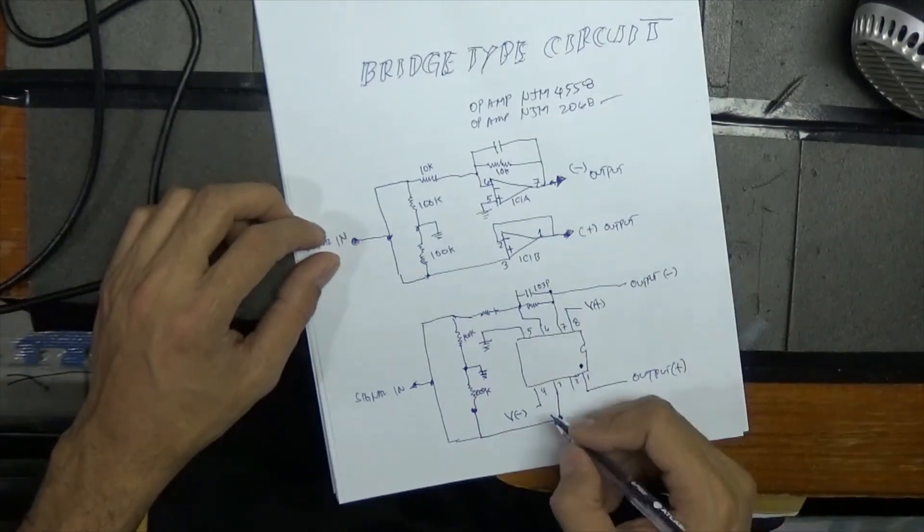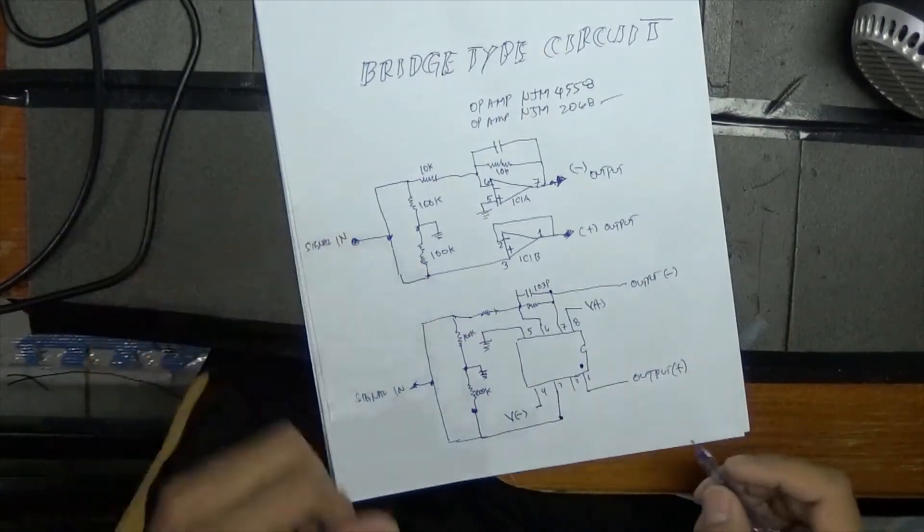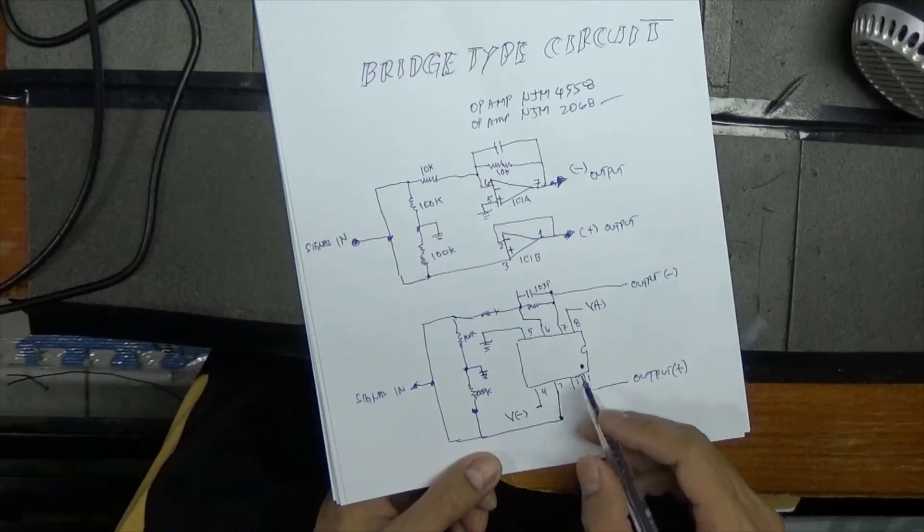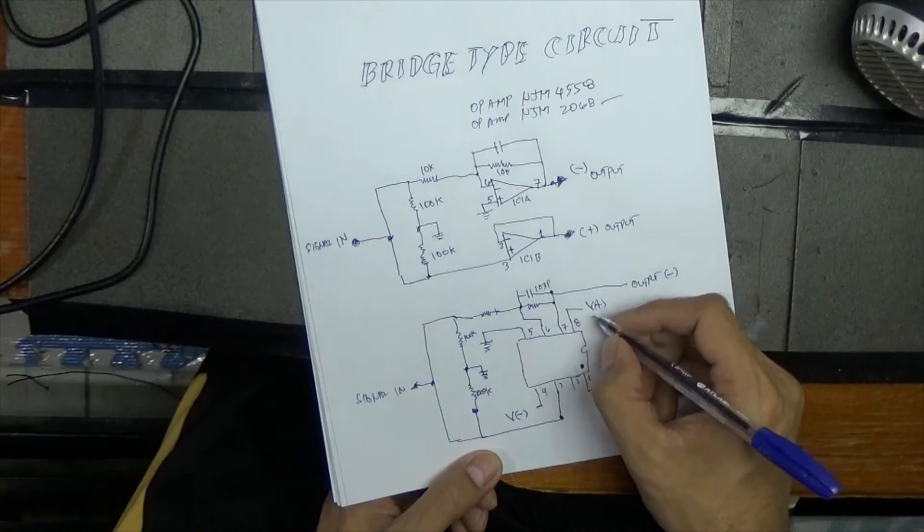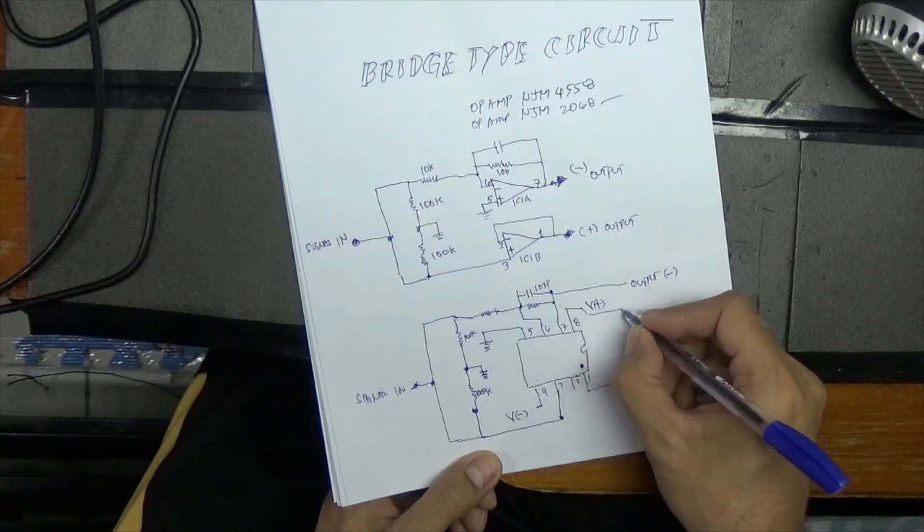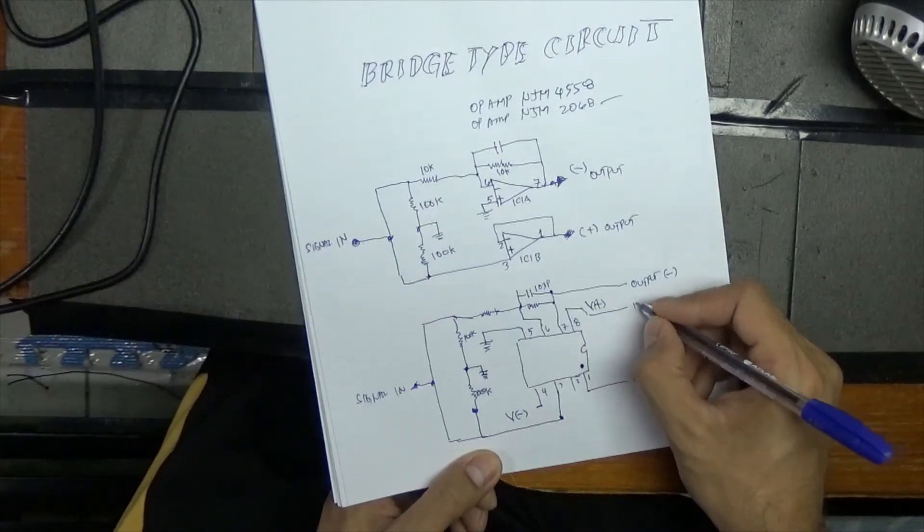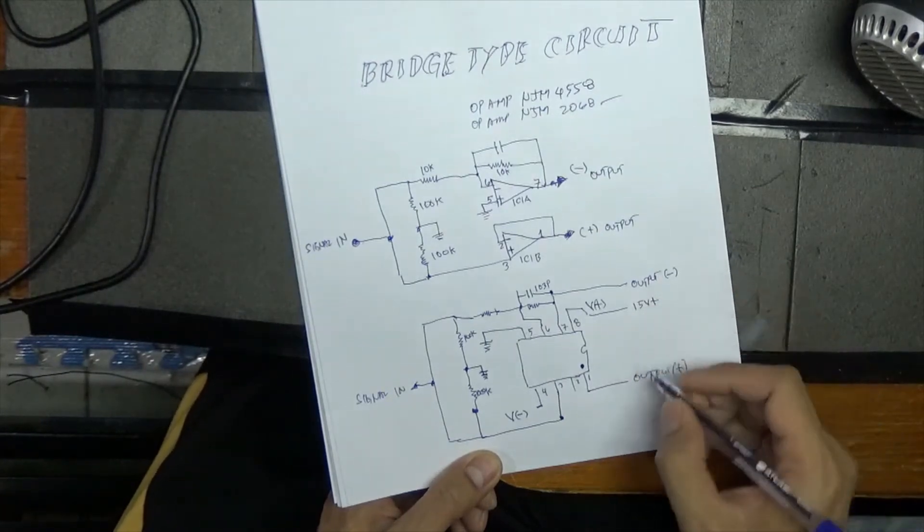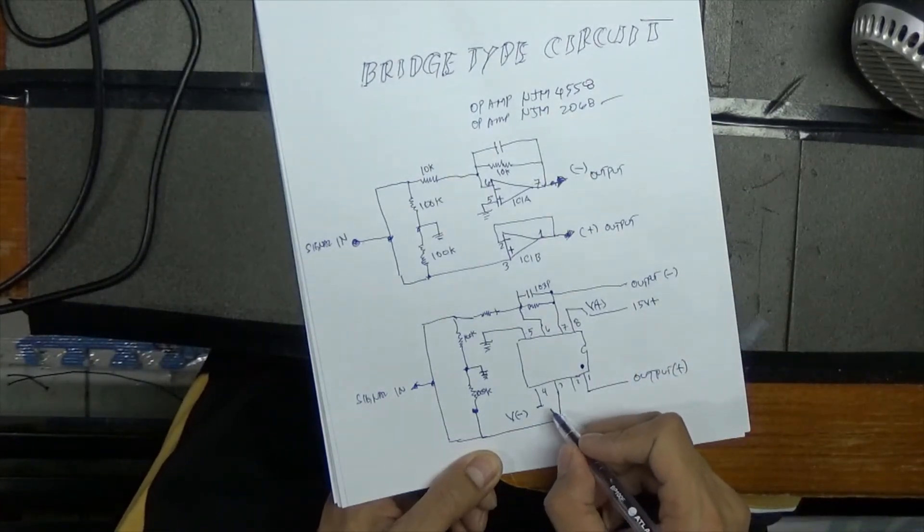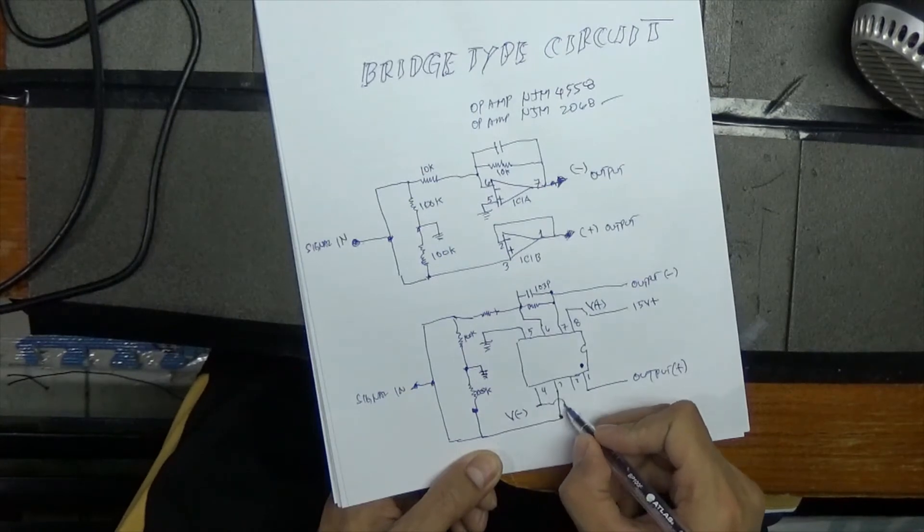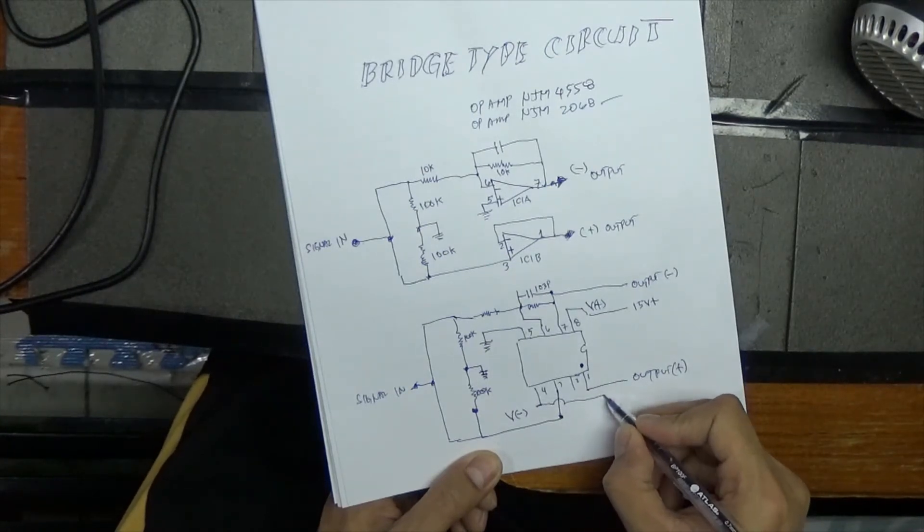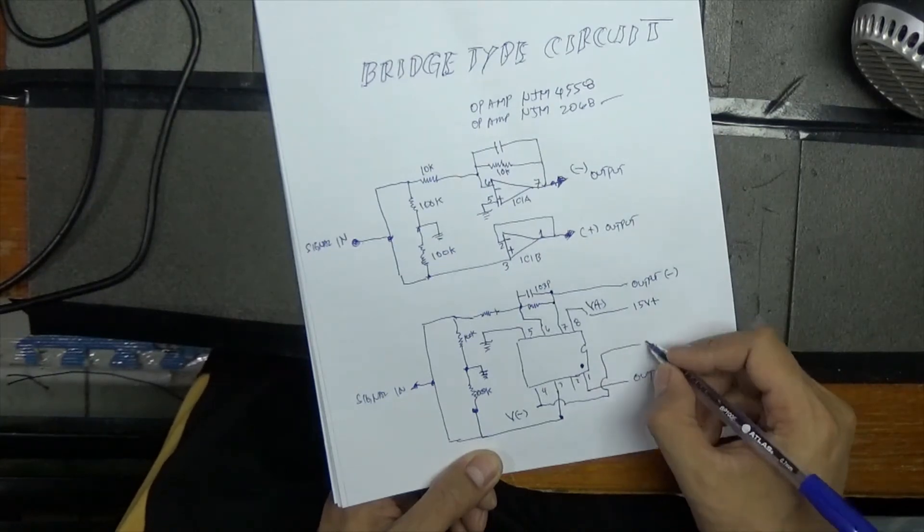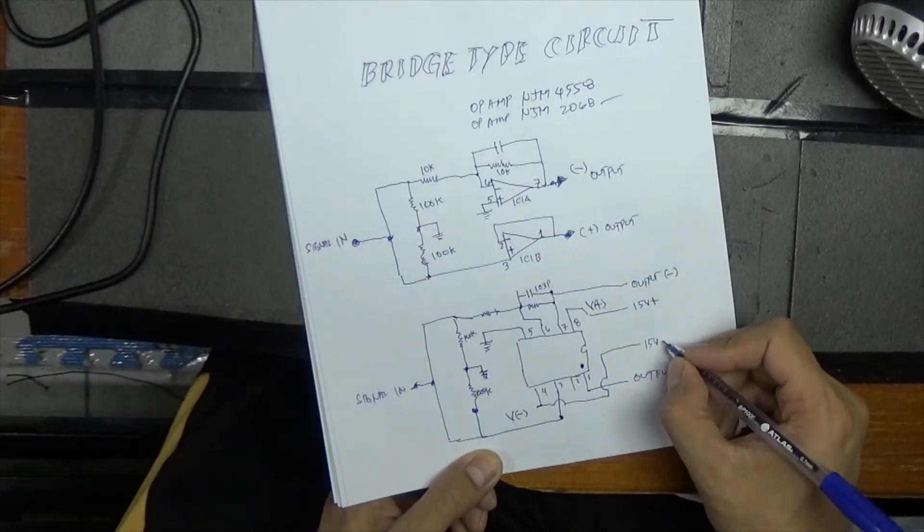That's it. This one is supply. For example, this one is B plus 15 volts positive, and this one, 15 volts negative.